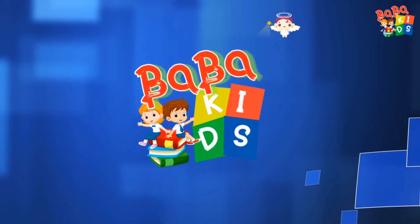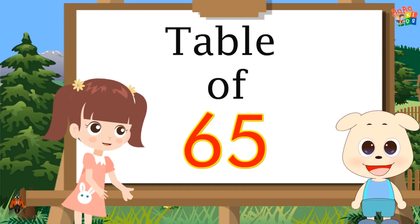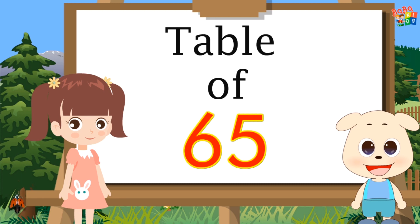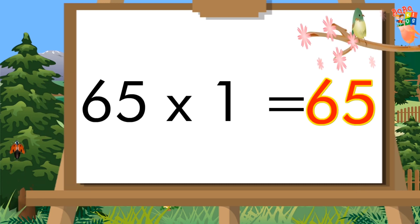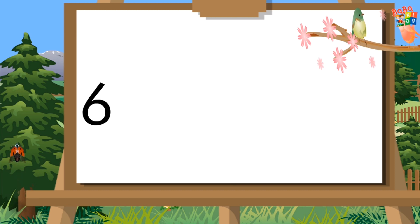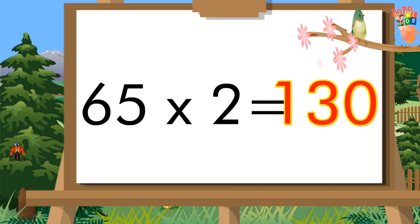Baba Kids. Table of 65. 65 times 1 is 65. 65 times 2 is 130.